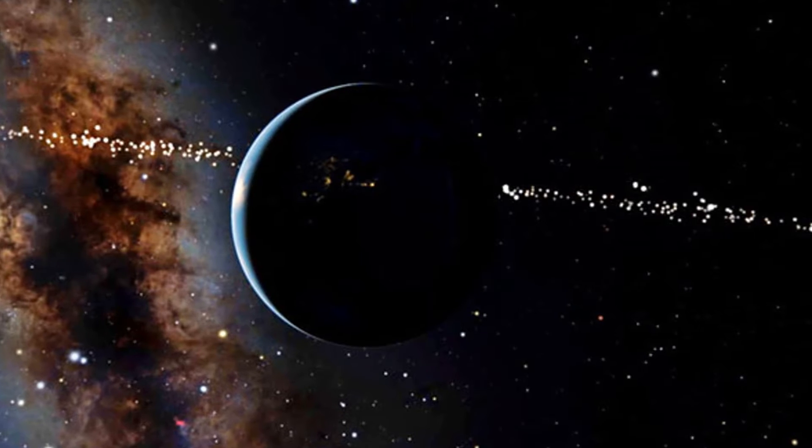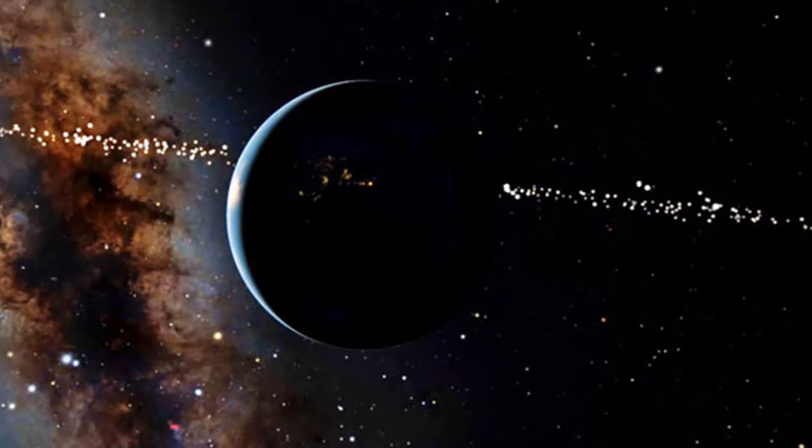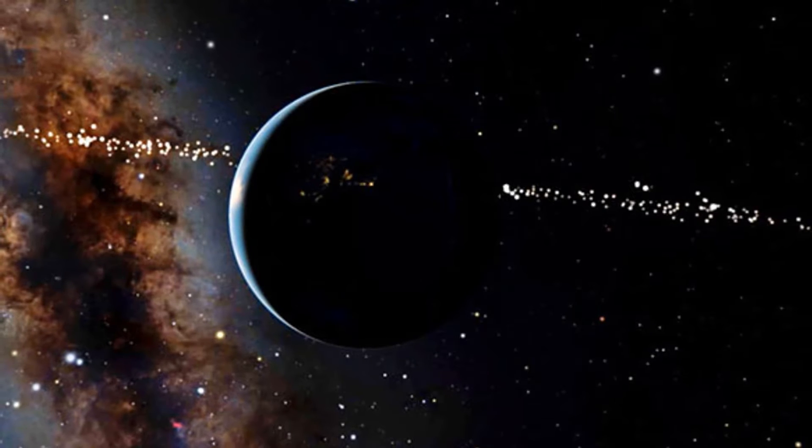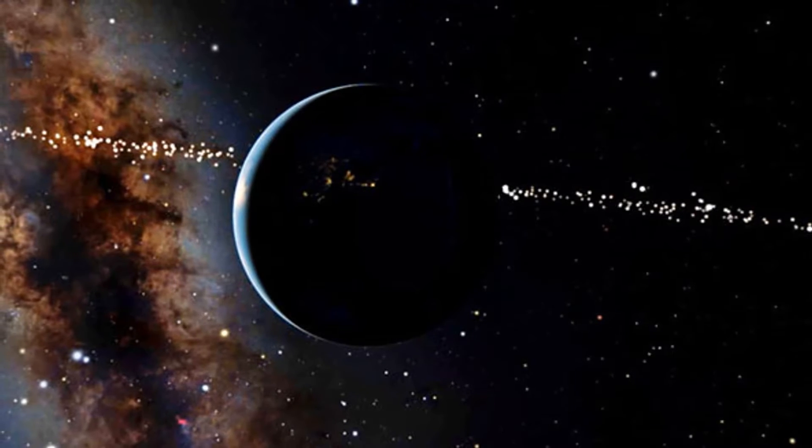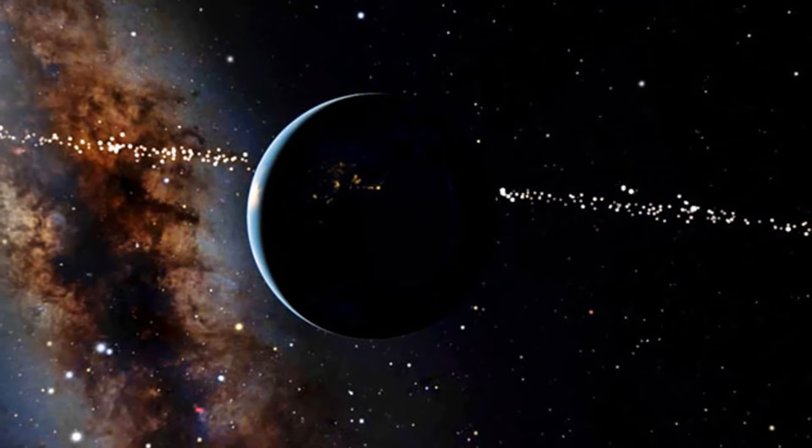Now, scientists have identified 1,715 star systems whose hypothetical inhabitants could have seen Earth cross in front of the Sun sometime in the last 5,000 years.